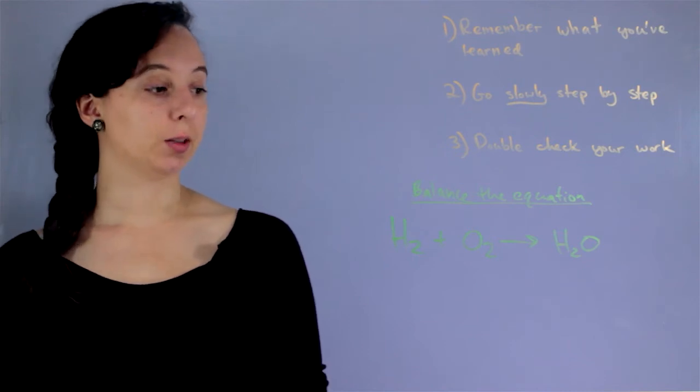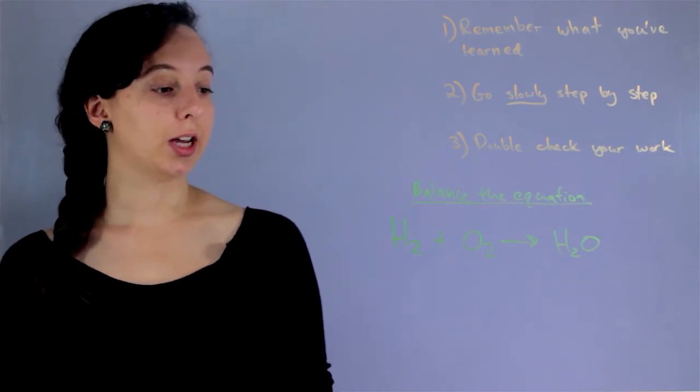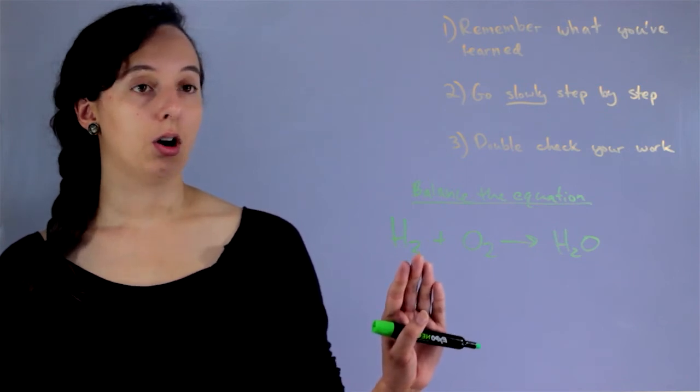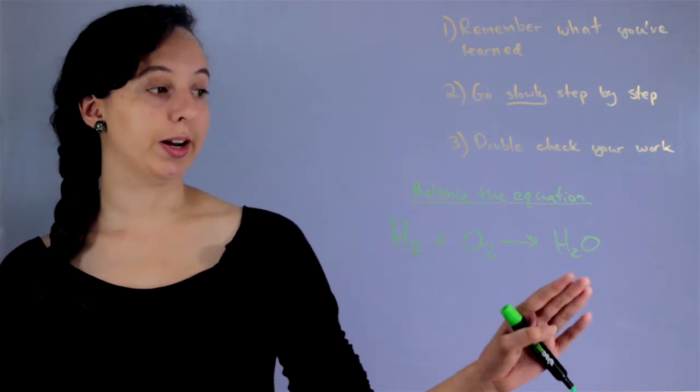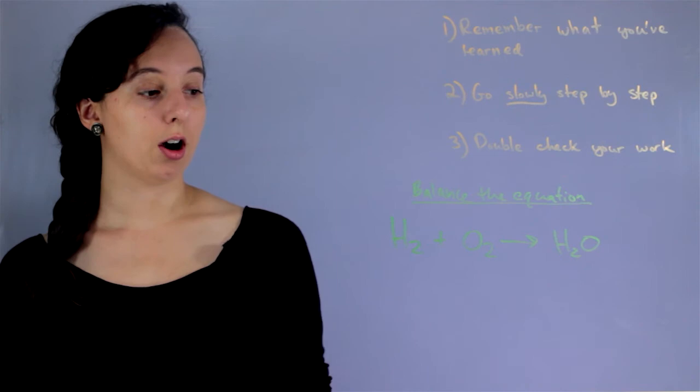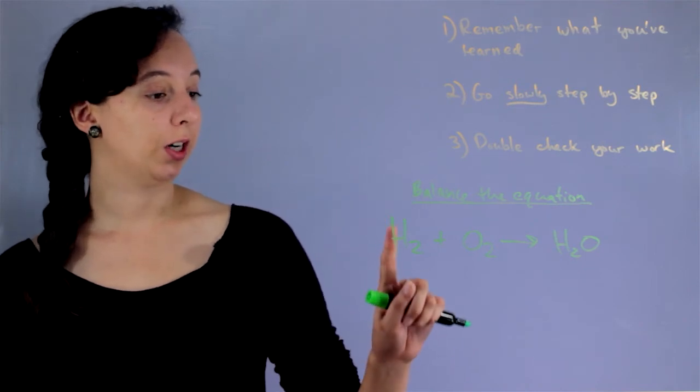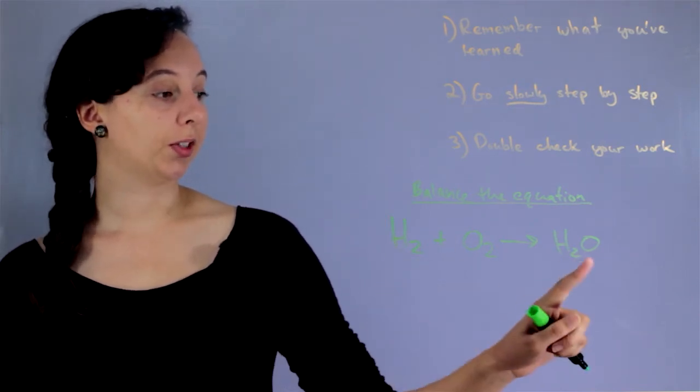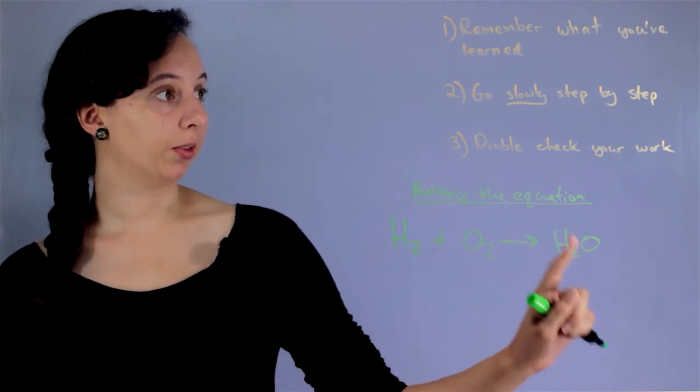And so balancing is making sure that there's the same amount of each element on the left side of the arrow as well as the right side of the arrow. So for our purposes, we need to make sure the same amount of hydrogen is on both sides and the same amount of oxygen is on both sides.